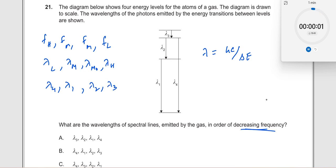So which is the right answer here? B over here. Lambda 4, lambda 1, lambda 2, lambda 3. Okay?